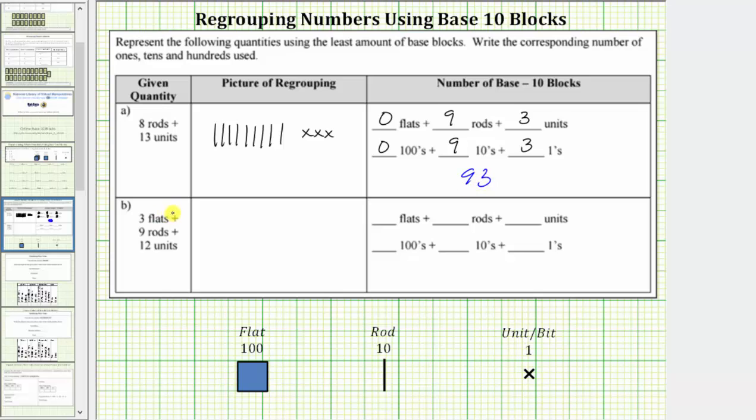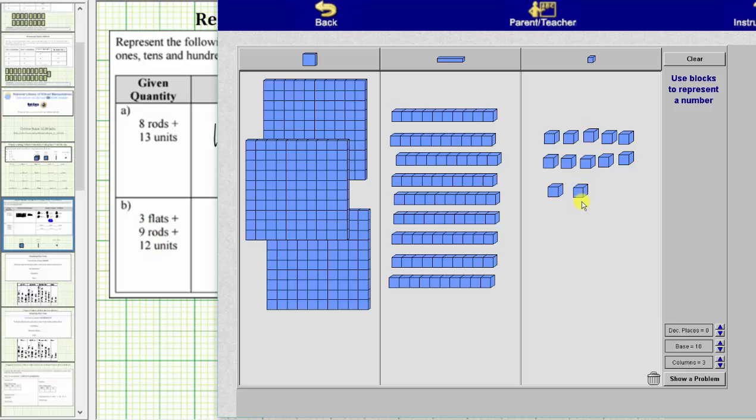Next we have three flats plus nine rods plus 12 units. And again, the goal is to represent this quantity using the least number of base 10 blocks. So looking at the units, we can perform an exchange. We can exchange these 10 units for one rod, move the rod to the next column.